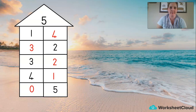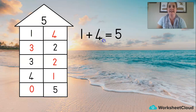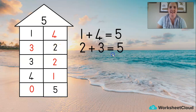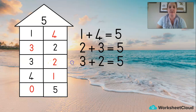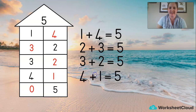Let's make some plus sums! The answer is five. How about one plus four is five. Can you do the next row? Three plus two equals five. Let's say it the other way around — two plus three equals five. Over here: four plus one is five, and naught plus five is five.